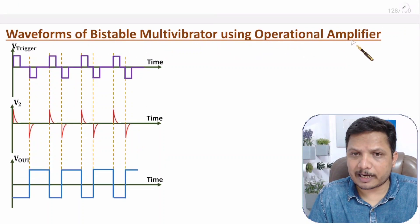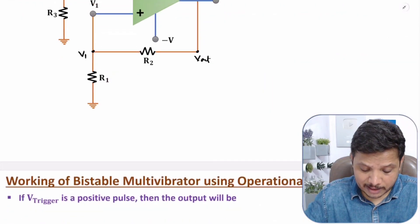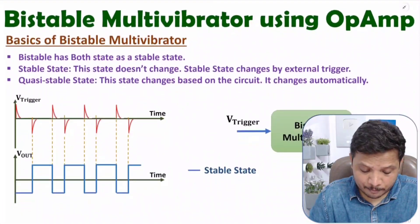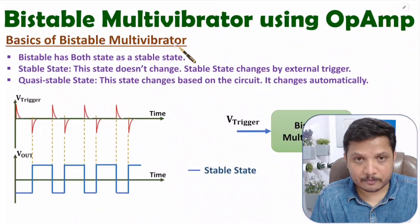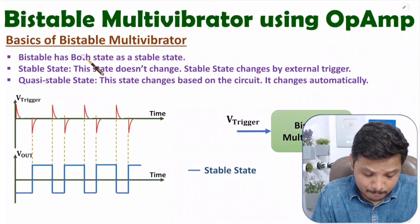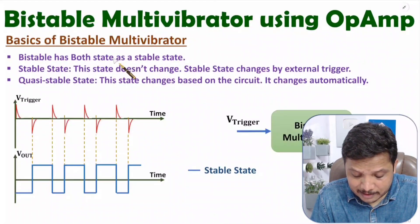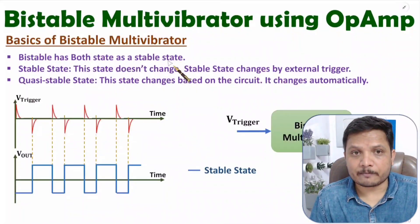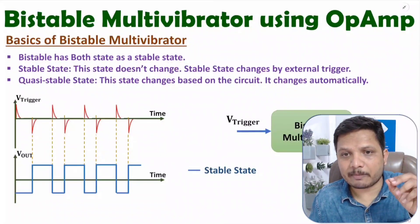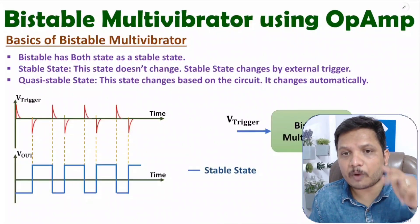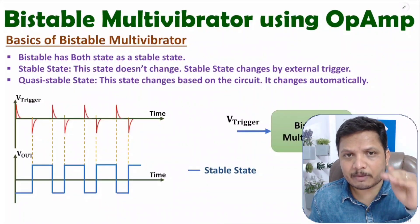Let us initiate this video with the first agenda: basics of bistable multivibrator. Bistable has both states as a stable state — bistable means both states are stable states. What is a stable state? A stable state doesn't change.